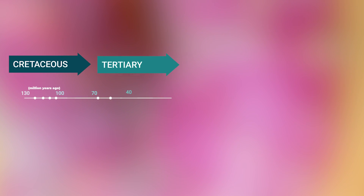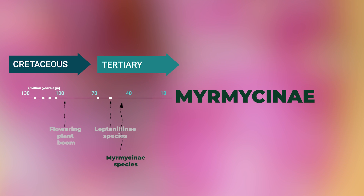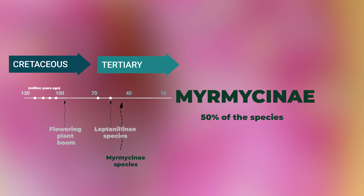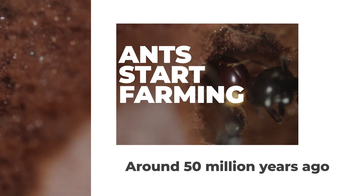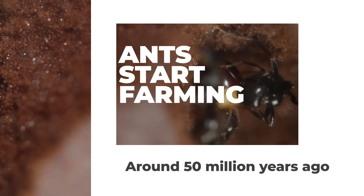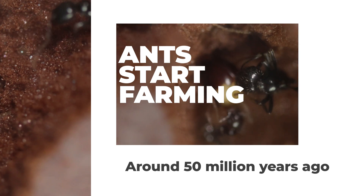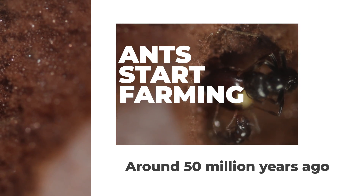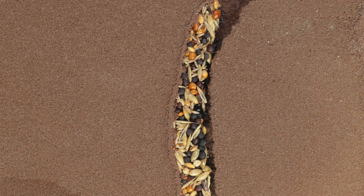Later, around 55 million years ago, the first species belonging to the Myrmesenae family appeared. This family of ants would flourish to the point of holding 50% of all ant species, and that is still the case today. Around 50 million years ago, ants started a form of agriculture. Certain hypotheses claim that the crisis that led to the dinosaur extinction forced ants to find ways to store and develop new sources of food.